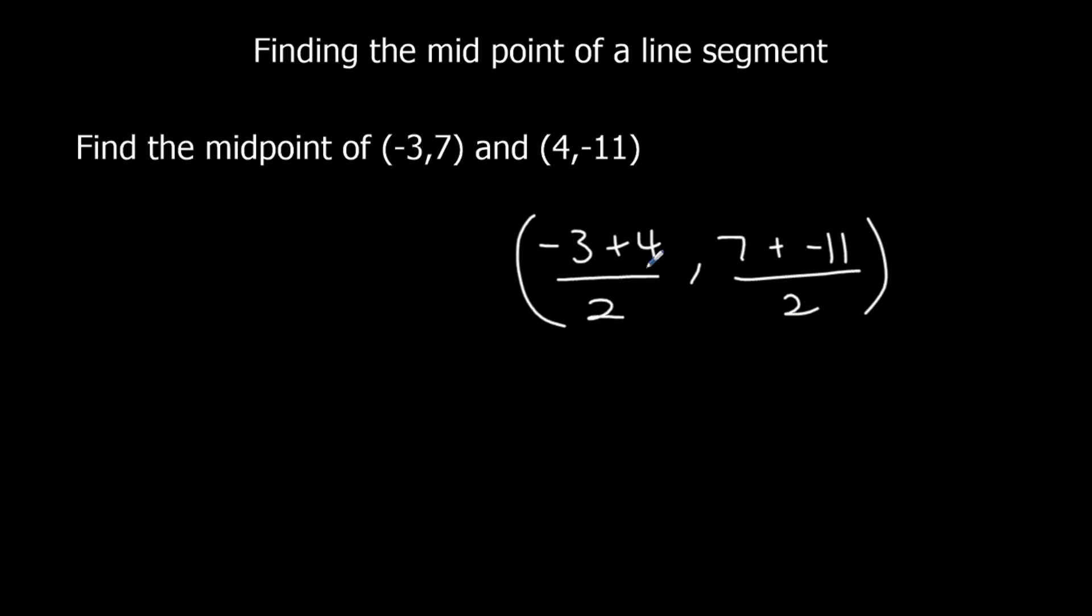Minus 3 plus 4 is 1. 1 over 2, we just put half, 0.5 or half, both fine. 7 plus minus 11, that just means 7 minus 11. So that's minus 4, half of that is minus 2.